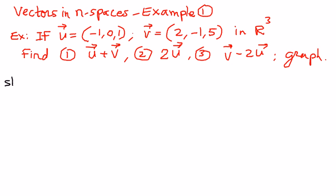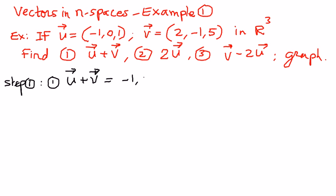So let us get started. We'll call this step number 1 and solve the first example. The first example asks for vector u plus vector v. Vector u is given as negative 1, 0, 1, and vector v is given as 2, negative 1, and 5.